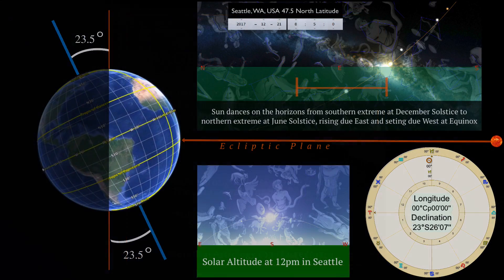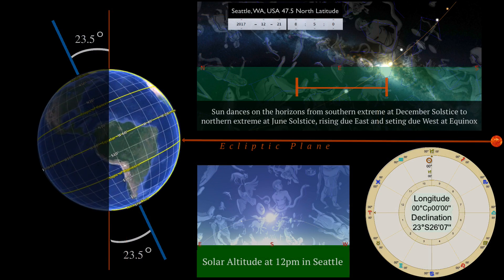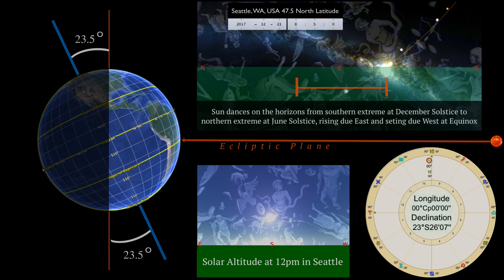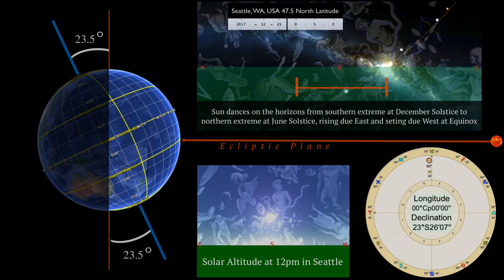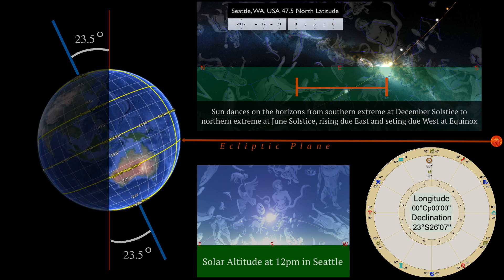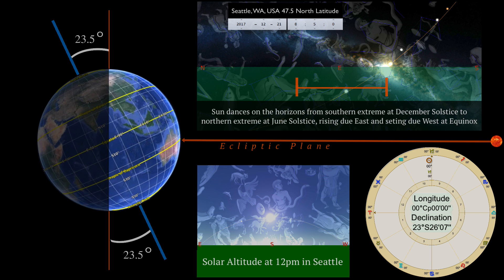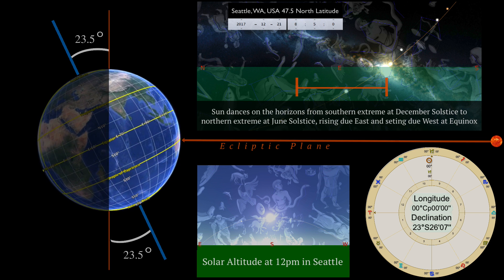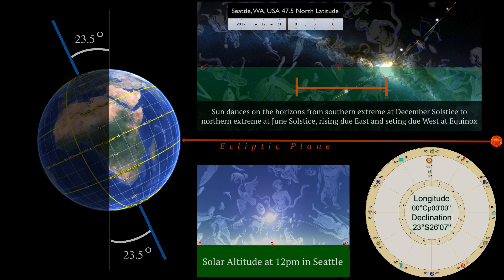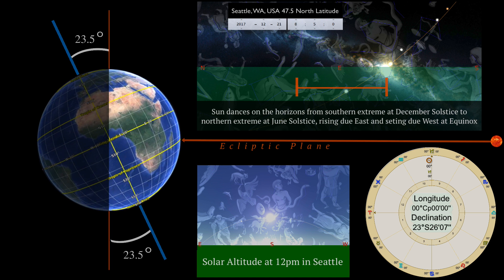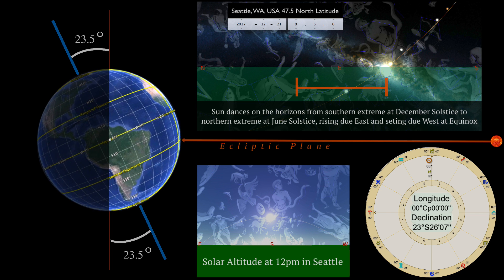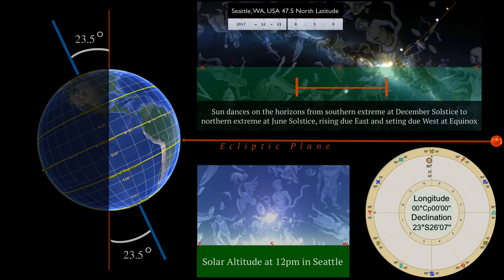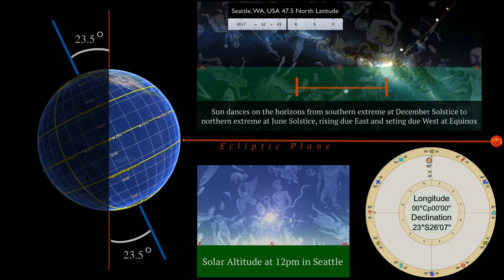Happy solstice, friends. This is Gemini Brett of More Than Astrology. This video demonstrates the turning of the year from several perspectives. On the left we see Earth spinning on its axis of daily rotation, which is tilted by an angle of about 23 and a half degrees in respect to the ecliptic, the plane of Earth's annual orbit about the Sun.